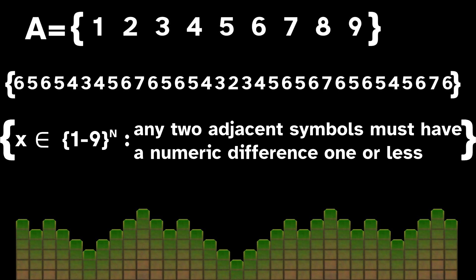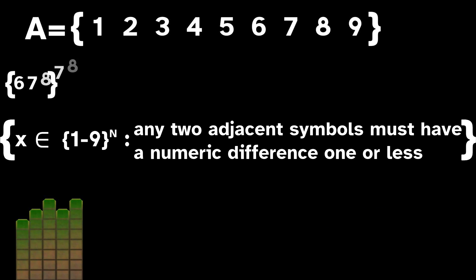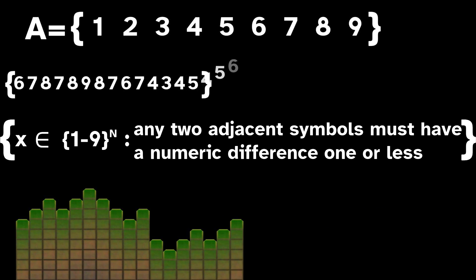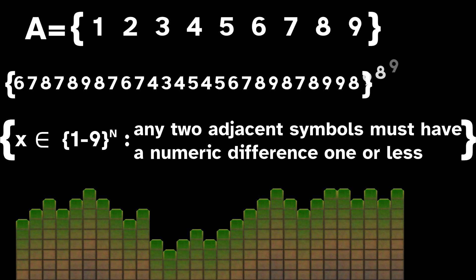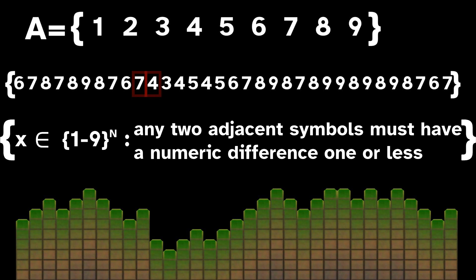We can capture the set of all sequences satisfying this restriction with the adjacency rule: any two adjacent symbols must have a numeric difference of 1 or less. A sequence like this might be allowed by the rules, and would therefore be part of the subshift. But a sequence like this would not be allowed, because the symbols 7 and 4 are adjacent when they shouldn't be.